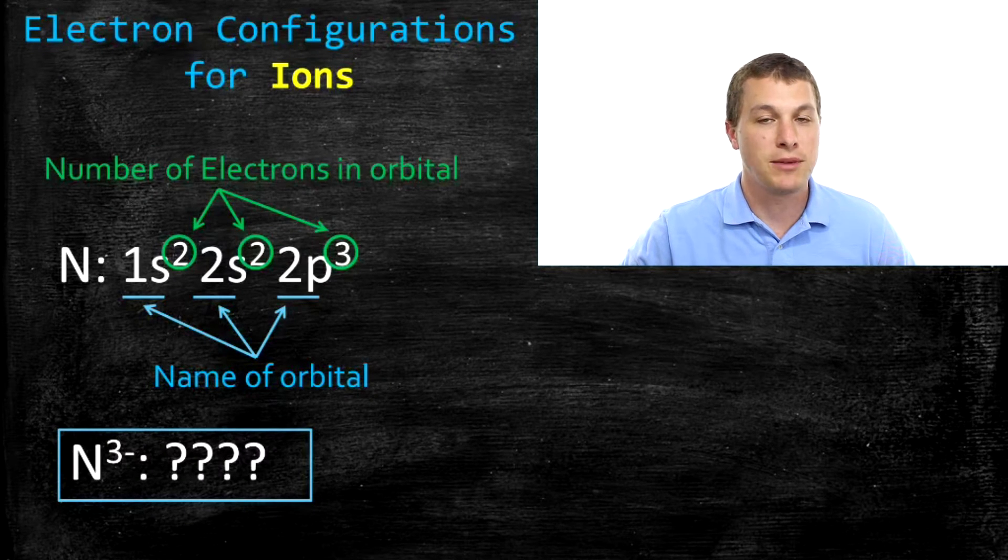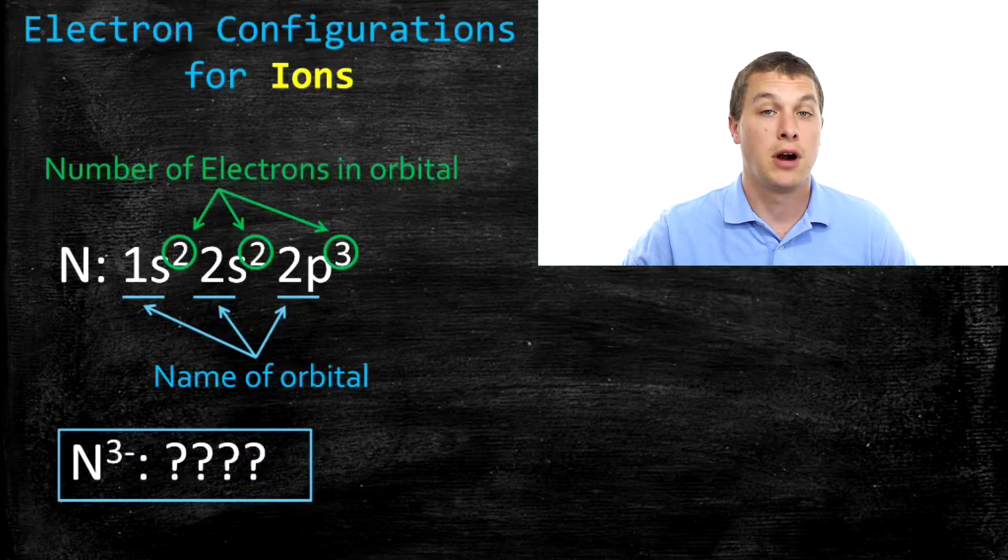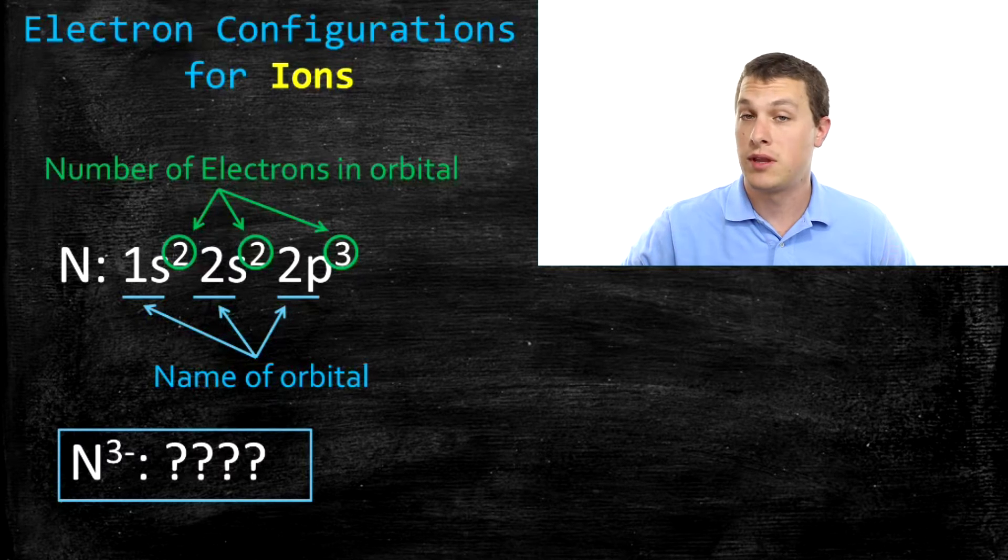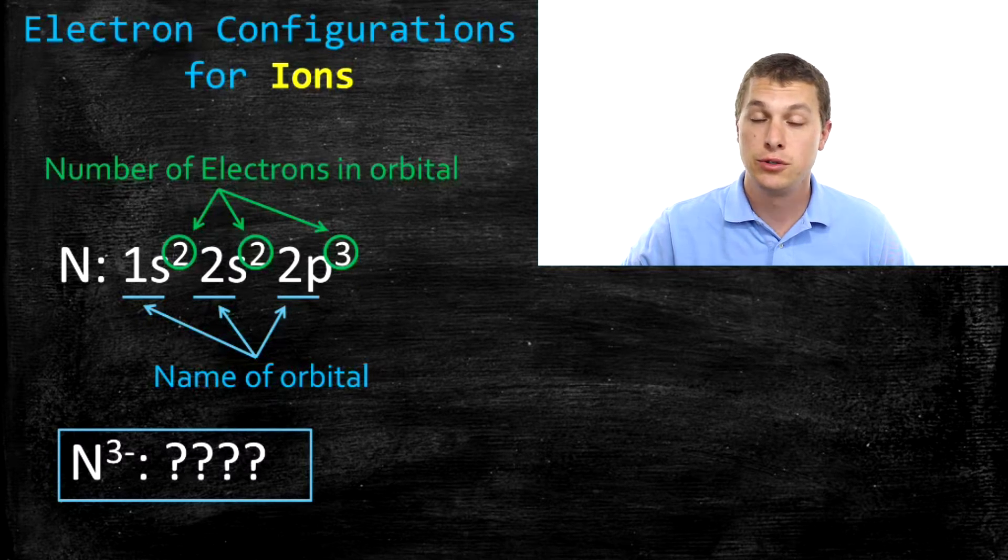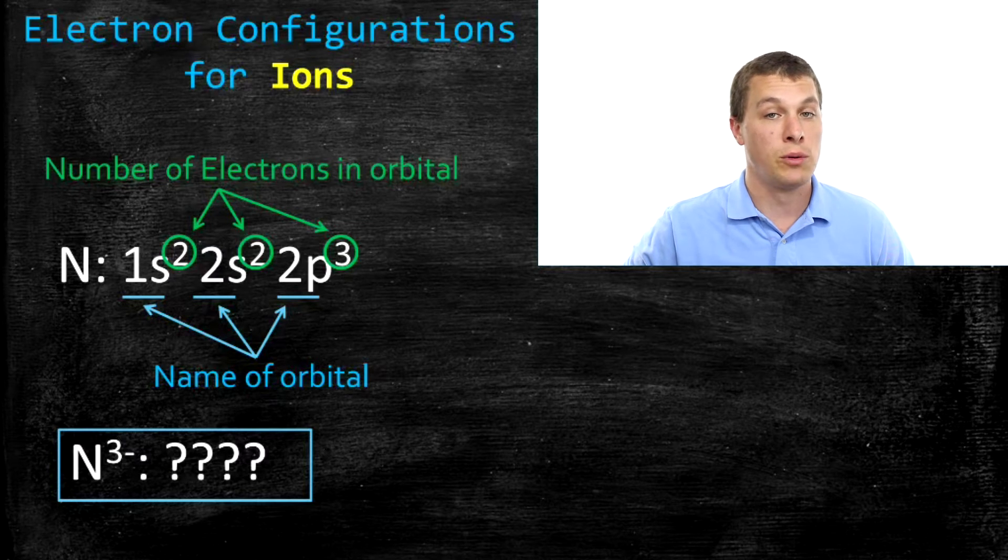Welcome to Real Chemistry. Today we're going to be talking about electron configurations for ions. So you might be familiar with how you write electron configurations for neutral atoms, but what about when we add or remove electrons?